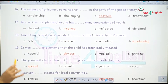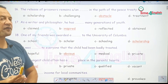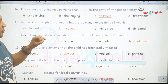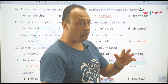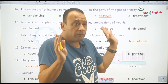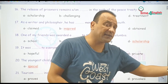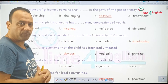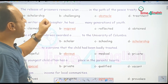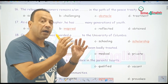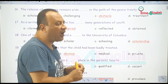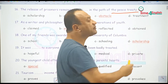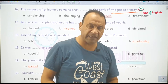Number 16 — the release of prisoners — الإفراج عن الـ prisoners دول، ربما مسجونين أو أسرى حرب. Remains an obstacle — يظل عقبة — in the path of a peace treaty — على طريق تحقيق معاهدة أو اتفاقية السلام. يعني الظاهر إن فيه شروط محطوطة علشان تتحقق هذه الاتفاقية، ومن ضمن الشروط دي الإفراج عن الأسرى.